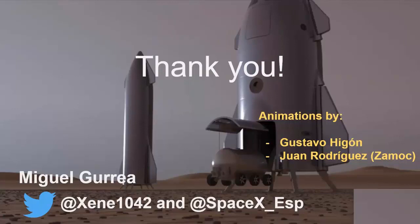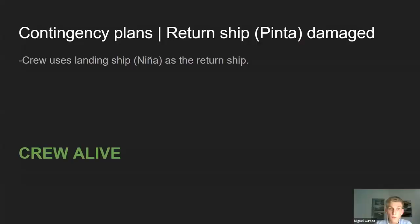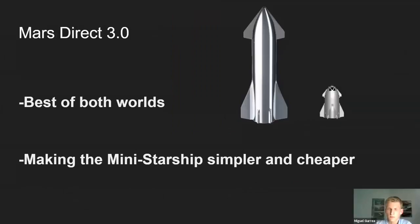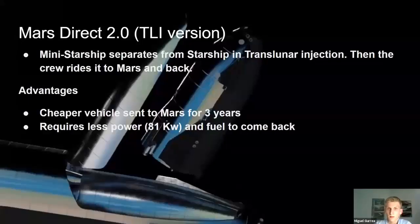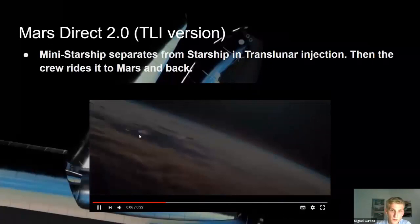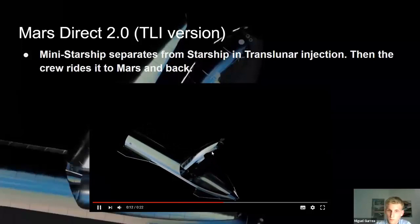Question: Would the crew launch inside the mini Starship while the main Starship launches, or how exactly would that work? Yes — they launch inside the mini Starship, which is inside the Starship. We have to remember that Starship doesn't have an abort system either, so it's not less safe than a normal launch. The mini Starship launches normally inside the Starship, and then the mini Starship with the crew deploys and proceeds to Mars.